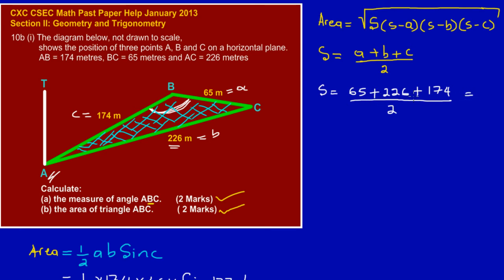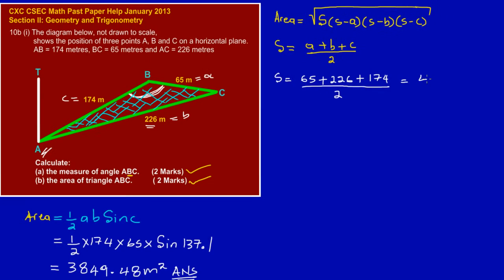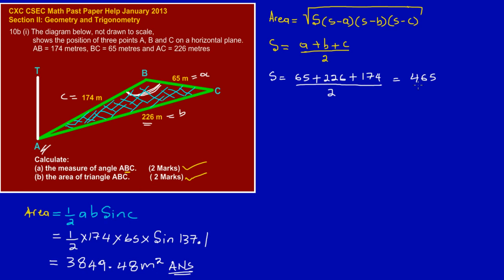This would be equal to 65 plus 226 plus 174, and by mental arithmetic that should be 465 divided by 2, which should be equal to 232.5. So therefore, s is equal to 232.5.